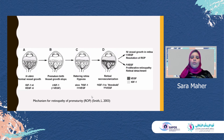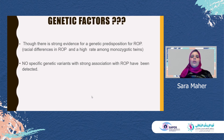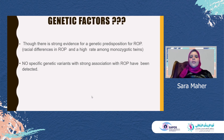There are presumed genetic factors for retinopathy of prematurity. Though there is strong evidence for genetic predisposition for ROP from racial differences and the high rate among monozygotic twins, till now no specific genetic variants with strong association with ROP have been detected.